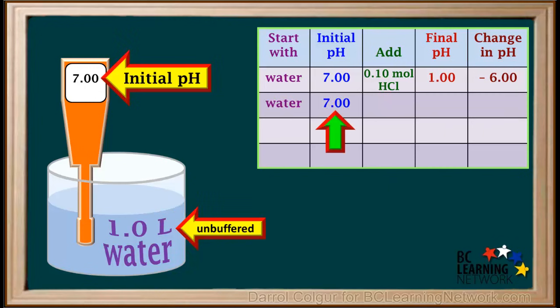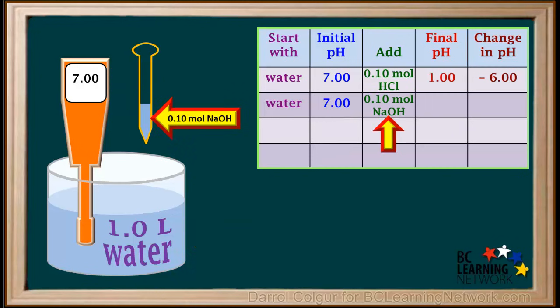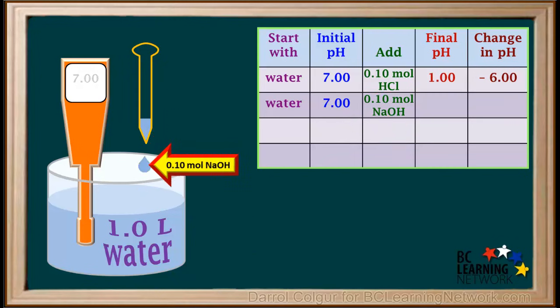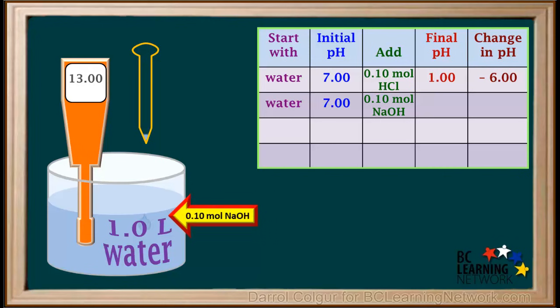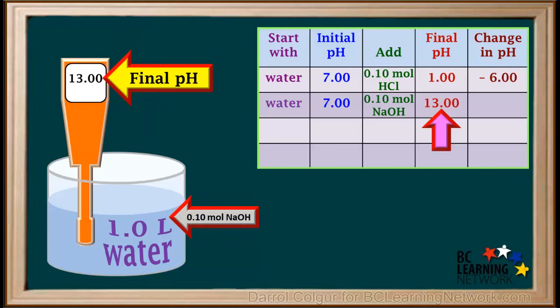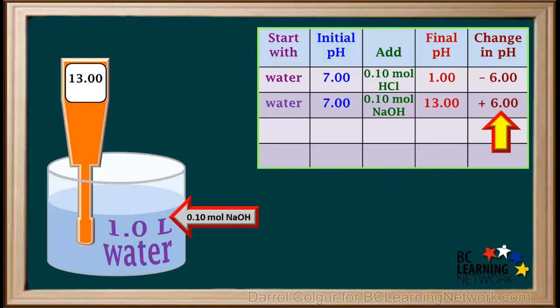Now we'll go back again and start with 1 liter of pure water. Again, its neutral pH is 7, and water is unbuffered. This time, we'll add 0.1 mol of the strong base NaOH. The final pH is 13. The pH went from 7 all the way up to 13, so that's an increase of 6 whole units.